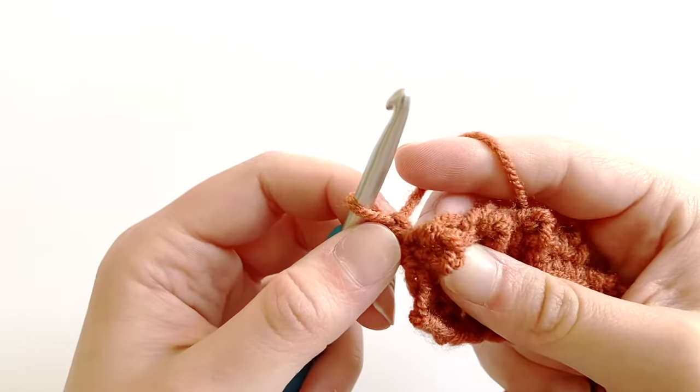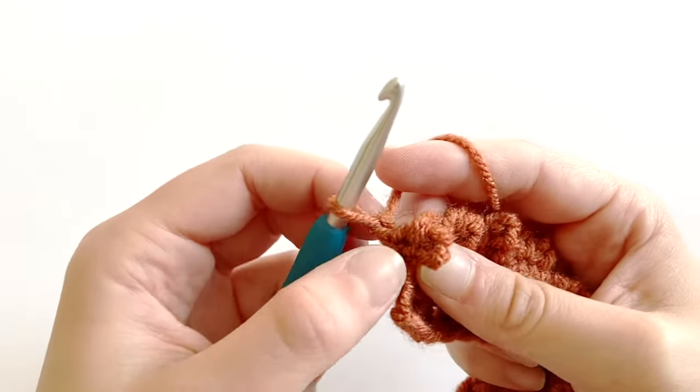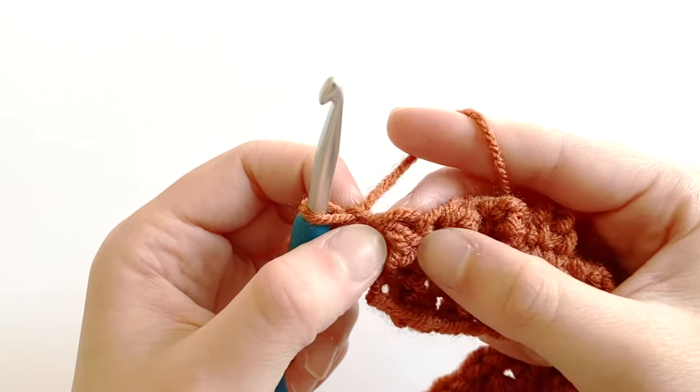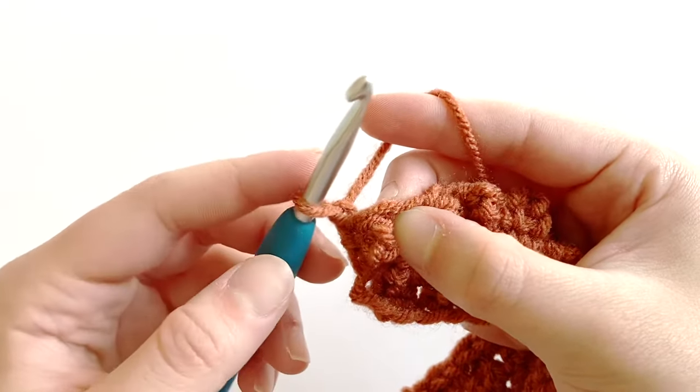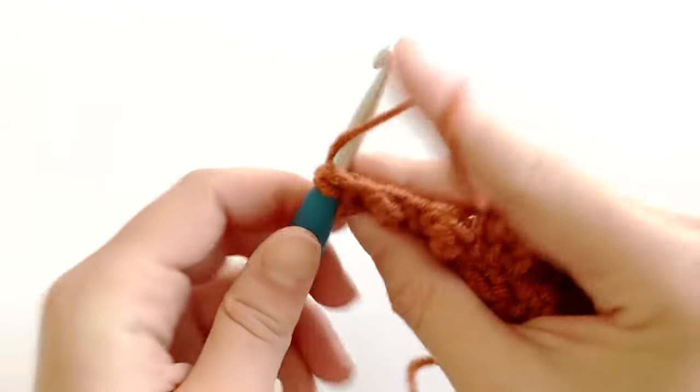So now to work the next row, instead of working into that slip stitch, you're going to work into the stitch where the triple crochet is.